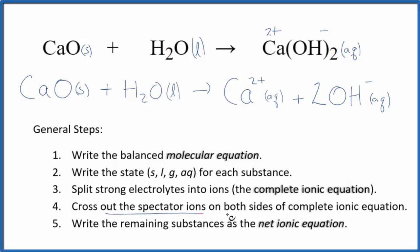Now we can cross out spectator ions. When we look at this, there aren't any spectator ions. Everything on each side is unique. So the net ionic equation and the complete ionic equation, they're the same. So this is both the complete and net ionic equation.